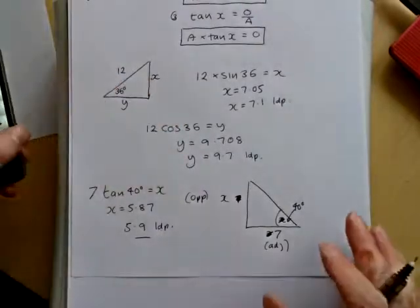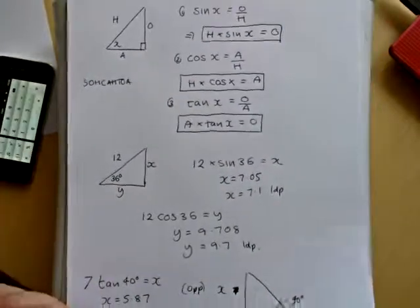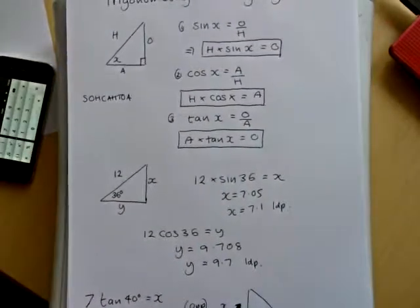So there's three examples, using sine, and then cosine, and tan, to find missing lengths in right angle triangles.